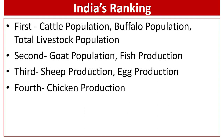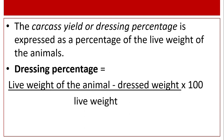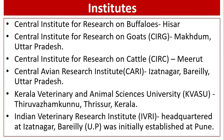India's ranking: first in cattle population, buffalo population, and total livestock population; second in goat population and fish production; third in sheep production and egg production; fourth in chicken production. Dressing percentage is expressed as a percentage of live weight. The formula is: Dressing percentage = (Live weight − Dressed weight) ÷ Live weight × 100.